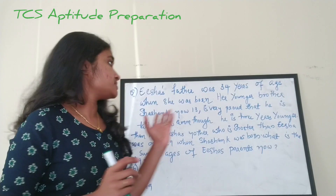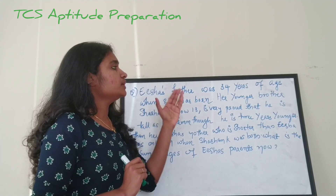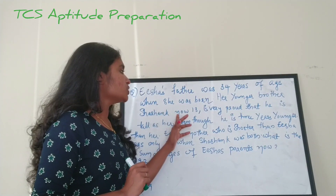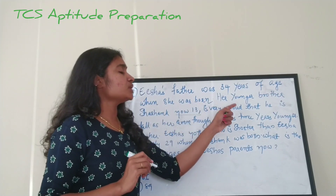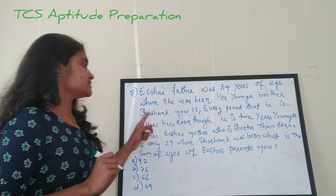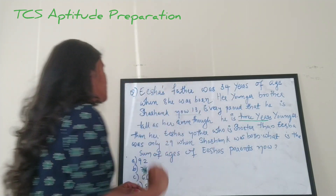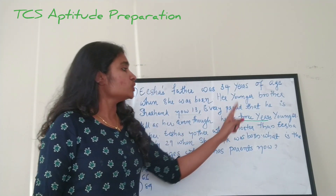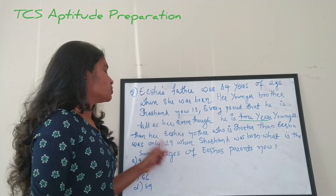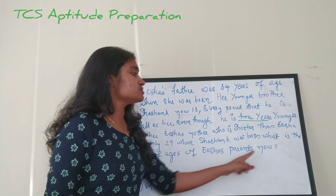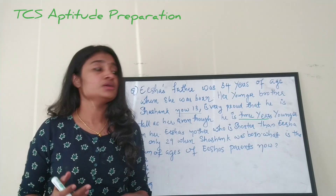Let's try to do some problems. Isha's father was 34 years of age when she was born. Her younger brother Shashank is now 13 — keep that in mind. He is very proud that he is as tall as her, even though he is three years younger. Isha's mother, who is shorter than Isha, was only 29 when Shashank was born. What is the sum of ages of Isha's parents now?